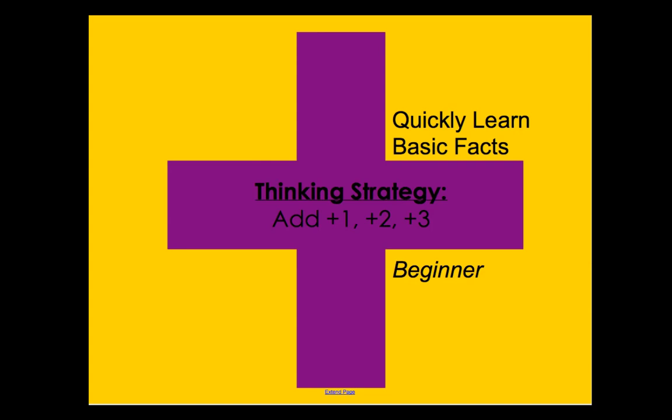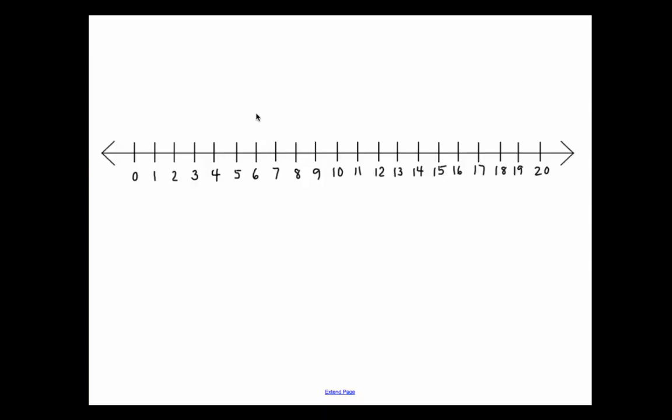To start off, we're going to think about a number line. A number line is a line that is horizontal, usually. That means it goes from left to right. And it has a number of equally spaced points which you can see, and each of the points are labeled as a number.